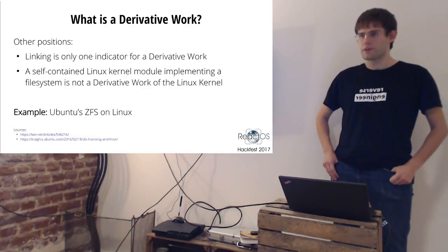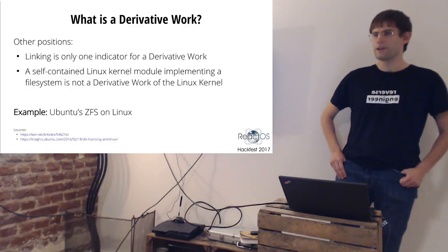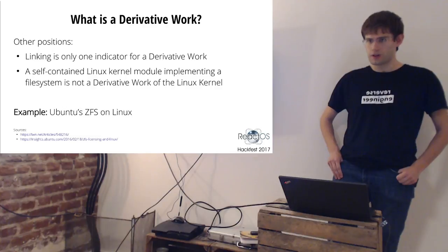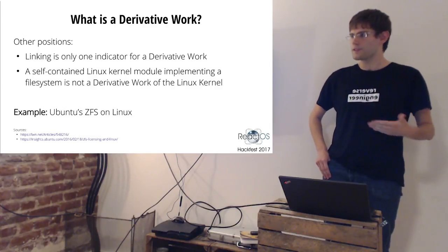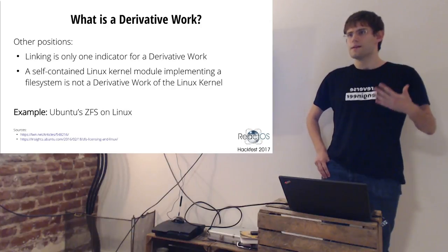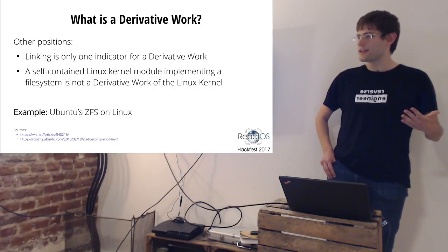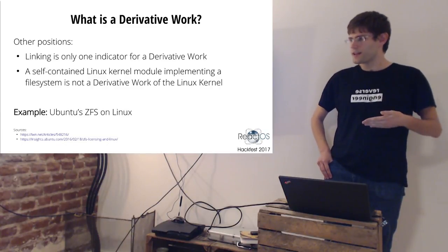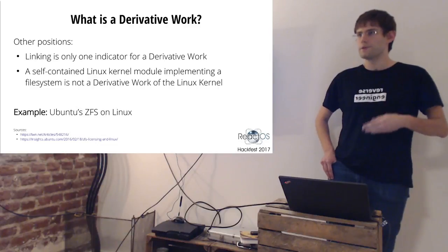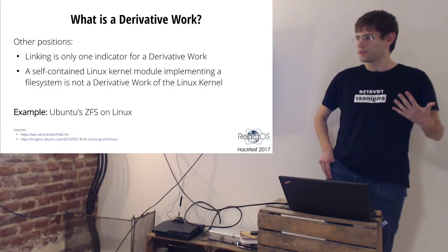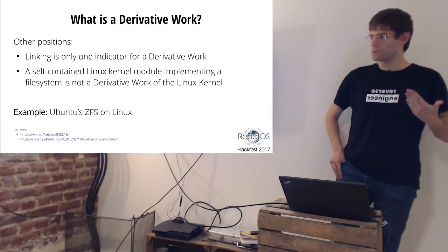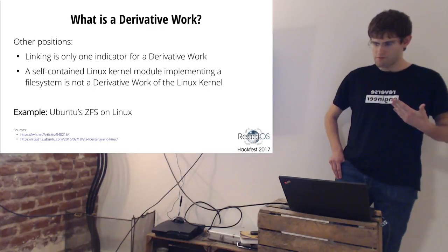This is also a popular position found online: linking is only one single indicator for a derivative work. For example, Canonical as the distributor of Ubuntu also defends this position. They recently released ZFS for Linux and say ZFS is not a derivative work of the Linux kernel — it is a self-contained module. The Linux kernel can be used without ZFS, ZFS was derived from its own sources and not really from the kernel sources, and as such it can have a different license than the Linux kernel itself.